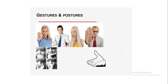Gestures are also very important. Here you can see four individuals using different gestures, and these gestures convey different meanings. Postures are also very important — in the four pictures shown, it is the same girl but her different hand positions are conveying different meanings. When she is putting her hand below the chin, it means she is happy or convinced. Different hand positions convey different meanings. Gestures and body postures can convey a lot of meanings.